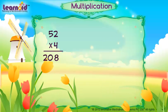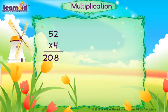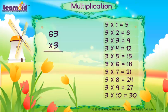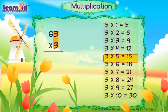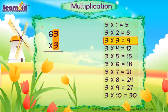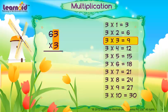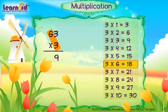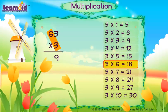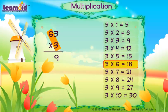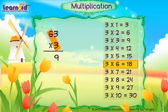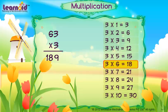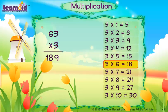Let's do one more example. Multiply 63 with 3. 3 into 3 is 9. Write 9. 3 into 6 is 18. Write 18. Answer is 189.